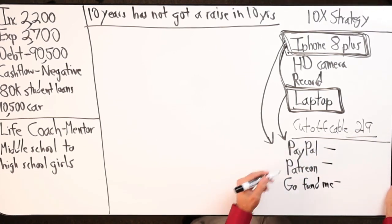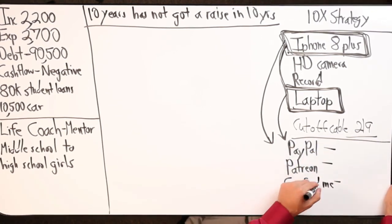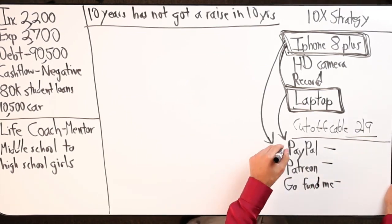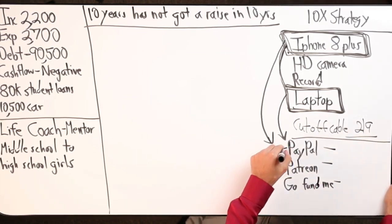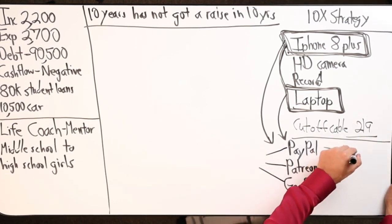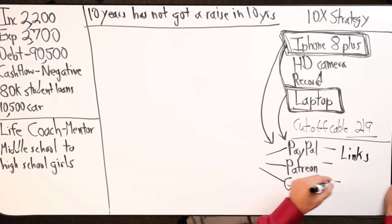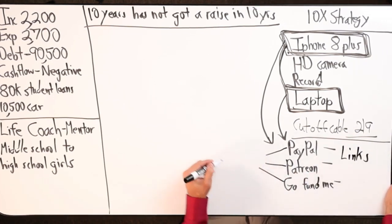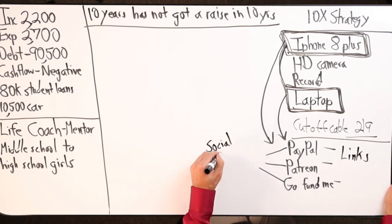So you make these three accounts: PayPal, Patreon, GoFundMe. And then what you're going to do is you're going to get links from these three things. They're going to give you links as soon as the accounts are made. And then you're going to come over here and you're going to establish social media accounts.